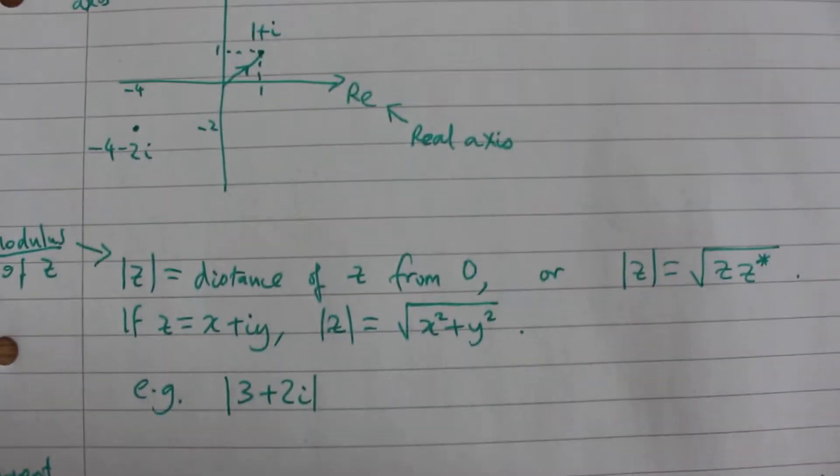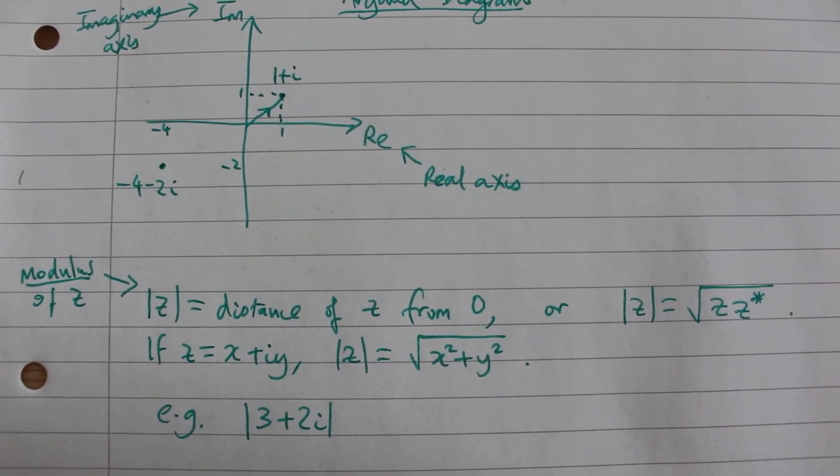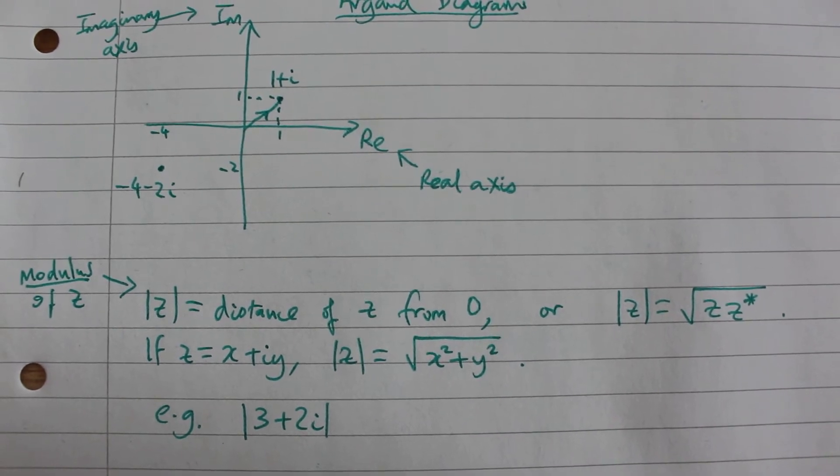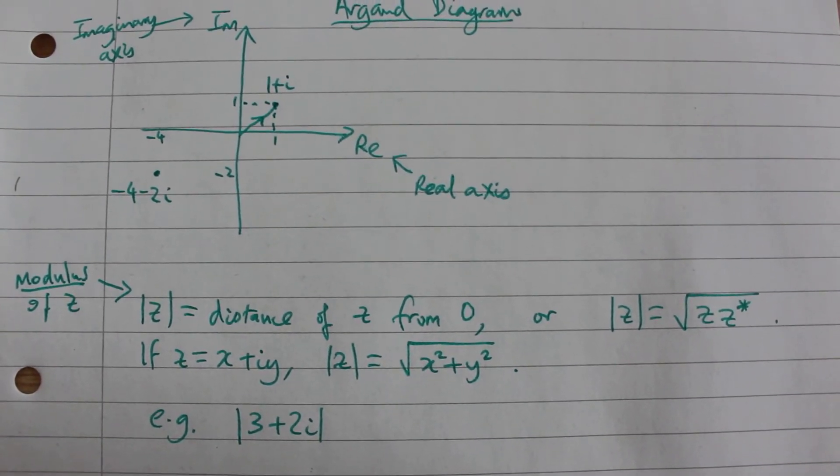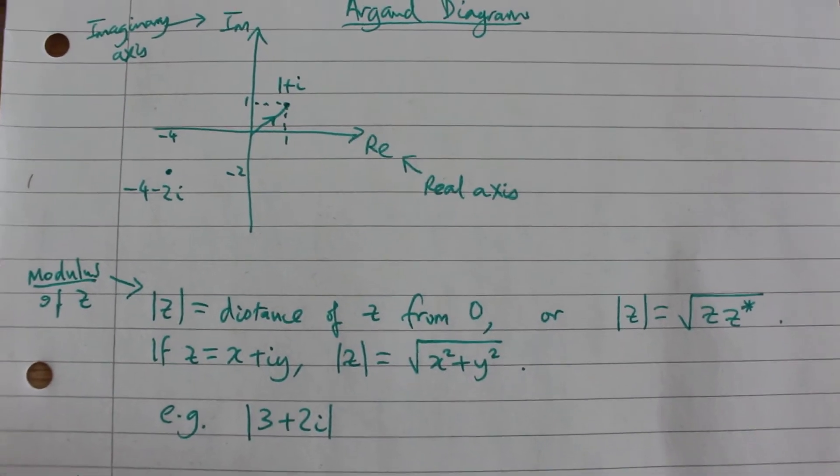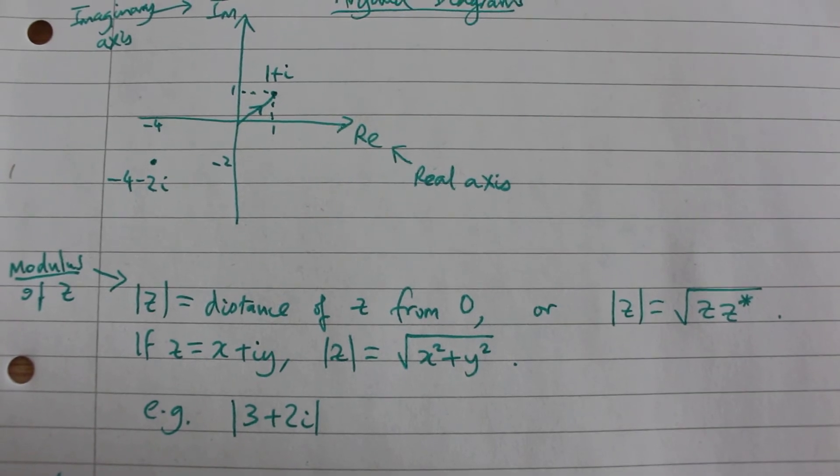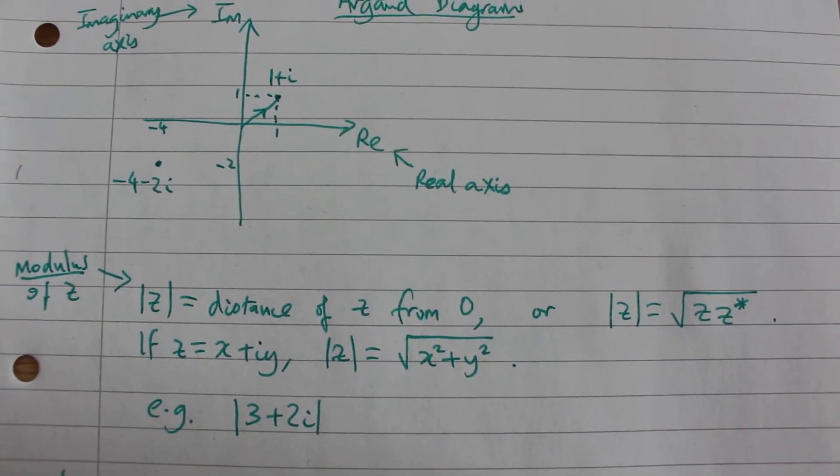We now move on to the modulus of a complex number. Just like for real numbers, the modulus of a complex number is its distance from the origin. We saw previously that this is also given by the formula: the modulus of z is the square root of z times its complex conjugate.